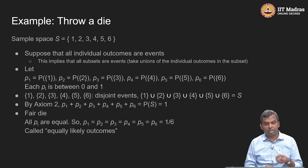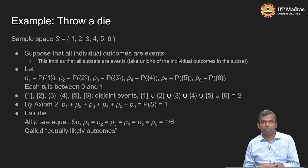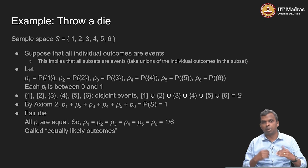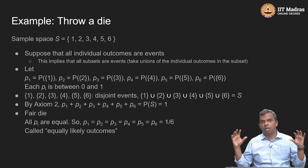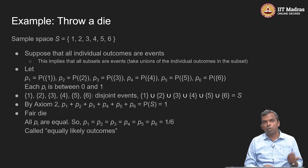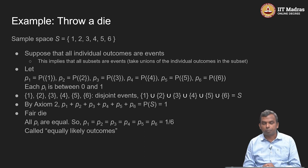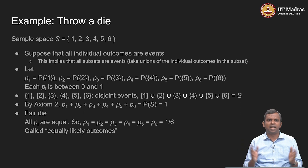The individual events 1, 2, 3, 4, 5, 6 are all disjoint and their union gives you S itself. Now axiom 2 kicks in and tells you p1 + p2 + p3 + p4 + p5 + p6 has to be equal to 1. And that is it — you do not need any other condition. Each of the pi have to be between 0 and 1 and they have to add up to 1.